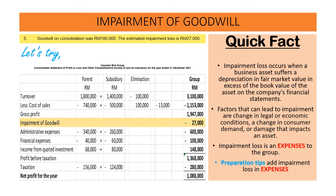Here you can look into the preparation of the Statement of Profit and Loss and Other Comprehensive Income, whereby we have to deduct the impairment of the goodwill from the gross profit that we have determined.